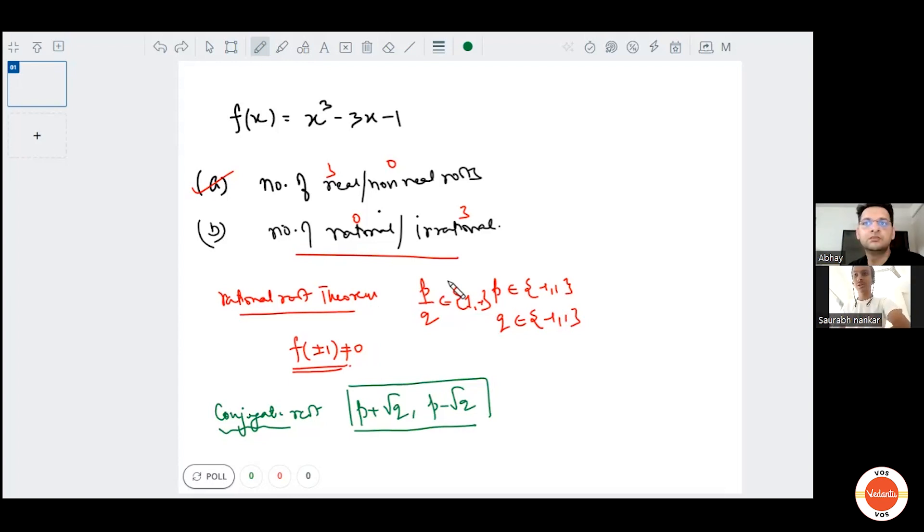Can I think for one minute? Yeah, take as much time as you want. Yes, like it can be possible. Can I give an example? Yeah, please. Suppose if one of the roots is √2, for example, and the other root is 2√2, and one of the root is minus 3√2.